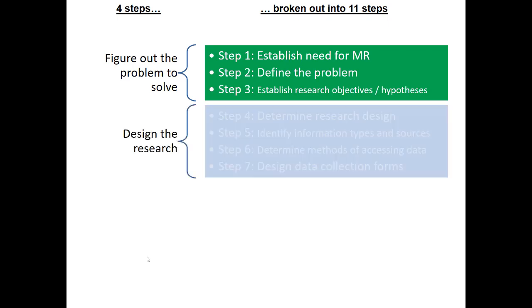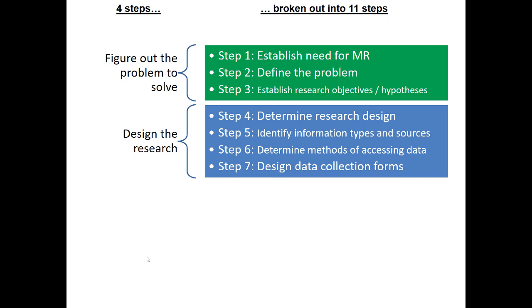Then we design the research. We determine the overall research design — the broad type of approach appropriate to address the question. Then we figure out exactly what types of information and sources we'll use, whether it's secondary data or primary data, where it's going to come from, and how we'll collect it. We determine how to get access to that data, and if necessary, we design data collection forms. This might take the form of a survey, a checklist, an interview protocol, or a spreadsheet to aggregate secondary data.